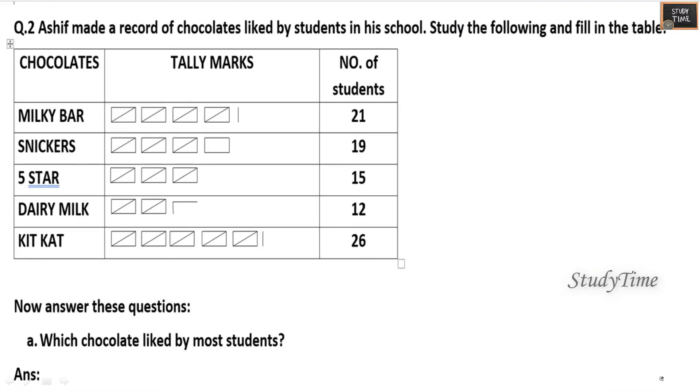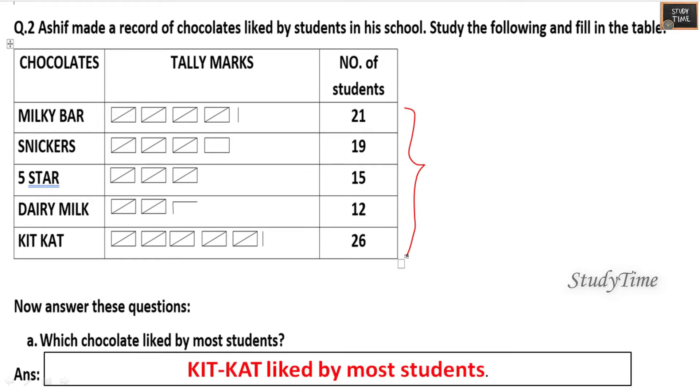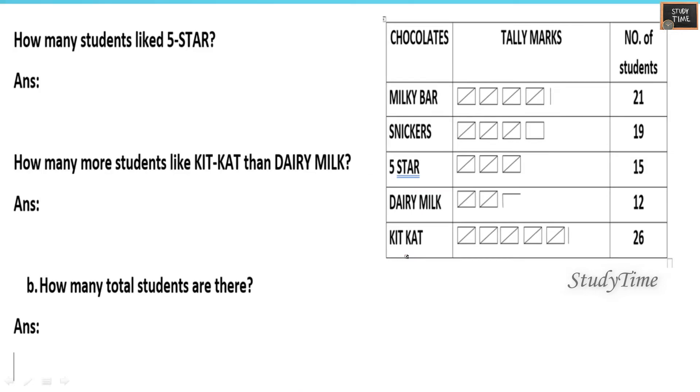Next, Ashif made a record of chocolates liked by students in his school. Study the following and fill in the table. So first: Milky Bar, Snickers, 5 Star, Dairy Milk, Kit Kat are given. Tally marks are given, number of students is given. So we'll answer the questions from the given data.